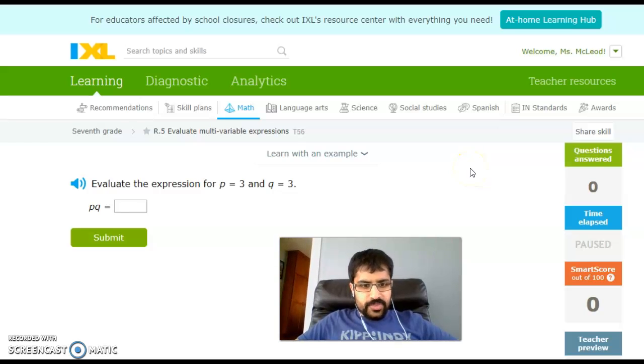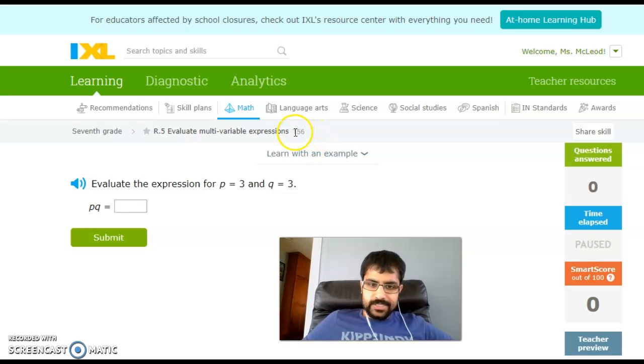Hey guys, Mr. Shaw here coming at you with Evaluate Multivariable Expressions. The quick code for this skill is T5-6.